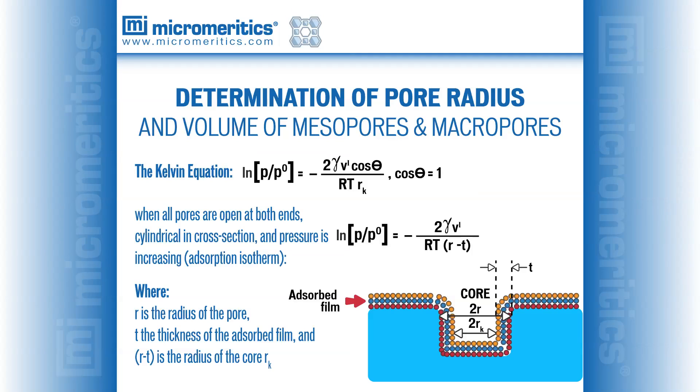Pore filling occurs when the equation is in balance. The only variables in the equation are P and R sub K. Thus, for any value of pressure, and therefore relative pressure, pores of size R sub K will fill. In addition to capillary condensation, for any unfilled pore, as pressure is building towards its critical filling pressure, the walls of the pore are being coated with layers of adsorbed molecules.